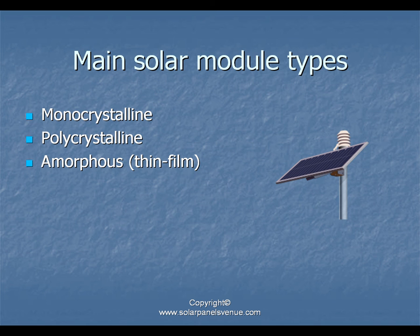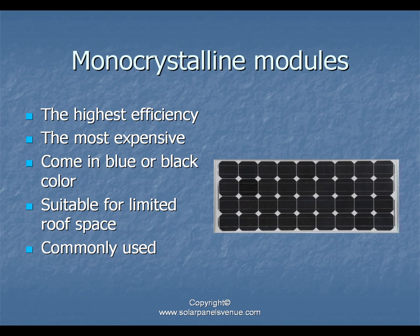There are three main types of solar modules: monocrystalline, polycrystalline, and thin film. Monocrystalline modules are the most efficient but also the most expensive, and they come in a blue or black color. Efficiency refers to how few modules you need to produce a certain amount of power — the fewer modules needed, the higher the efficiency. If roof space is limited, high-efficiency modules are the best choice.